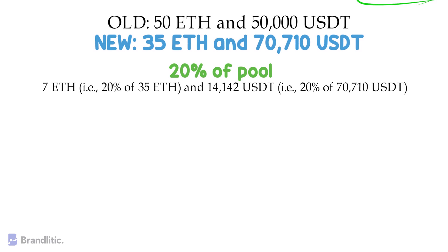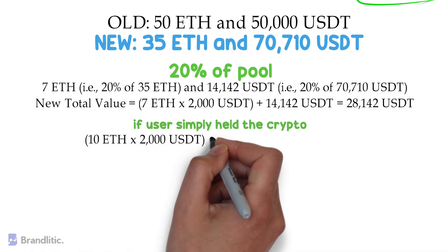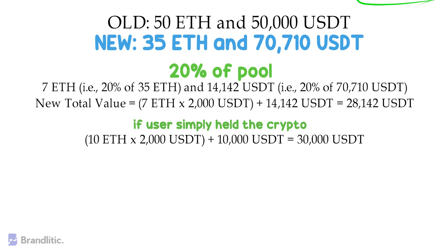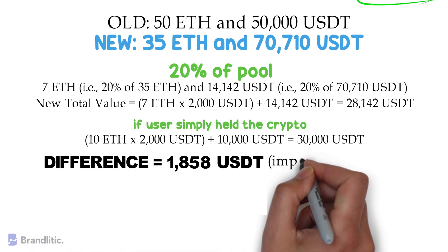The total value of the assets withdrawn equals 7 × 2000 plus 14,142 USDT, which is 28,142 USDT. However, if the user had simply held their 10 Ethereum and 10,000 USDT instead of depositing into a DeFi protocol, they would have gained more. Assuming Ethereum doubled in price from 1,000 USDT to 2,000 USDT, the user's non-deposited assets would have been valued at 30,000 USDT — simply 10 × 2000 plus 10,000 USDT equals 30,000 USDT. That difference, which occurs because of the way AMM platforms manage their asset ratios, is what is known as Impermanent Loss.